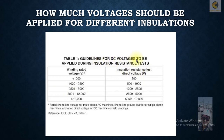Here is the guideline for DC voltage to be applied during insulation resistance testing. There are certain winding rated voltages — rated line-to-line voltage for three-phase AC machines, line-to-line-to-ground for single-phase machines, and rated direct voltage for DC machines or field windings. You can see the winding rated voltages listed in one column.